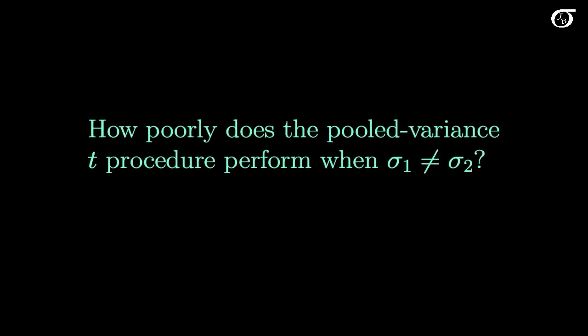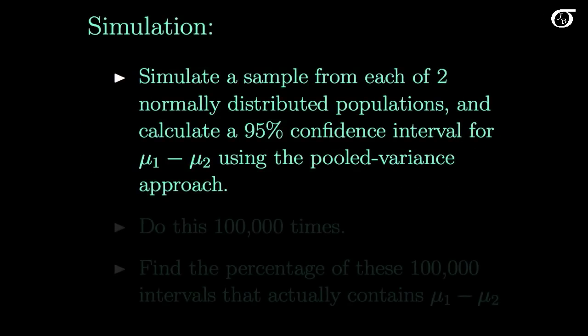A very natural question is how poorly does the pooled variance t-procedure perform when the standard deviations — or equivalently the variances — are actually different? We're assuming equal population variances, so what happens when they're actually different? Let's look at this via simulation. We'll simulate a sample from each of two normally distributed populations and calculate a 95% confidence interval for mu1 minus mu2 using the pooled variance approach.